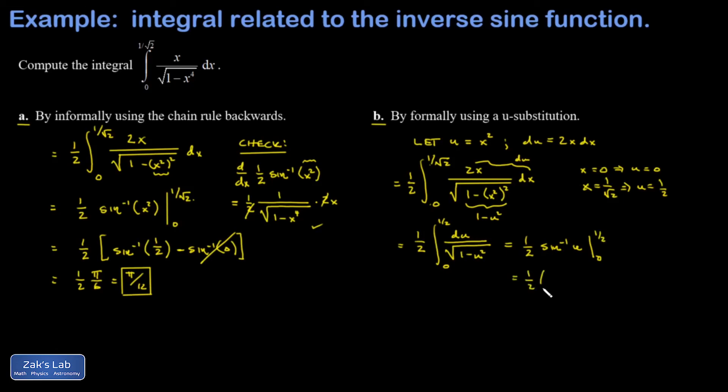So I get 1 half. The angle whose sine is 1 half minus the angle whose sine is 0. Again, that's 0. And the angle whose sine is 1 half is pi over 6. And 1 half of pi over 6 is again pi over 12.